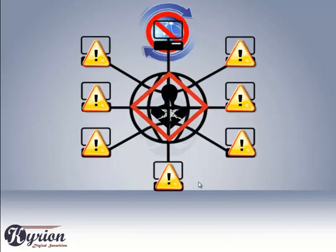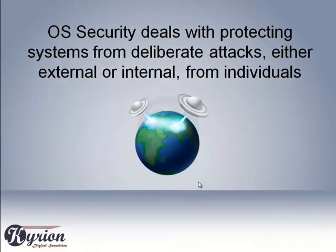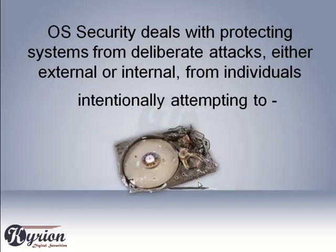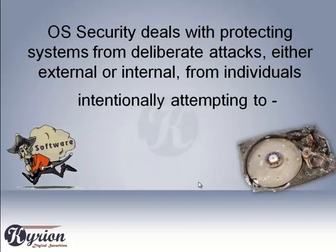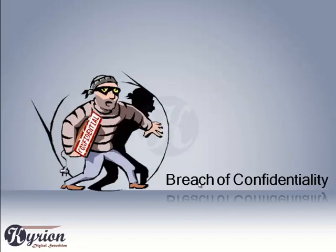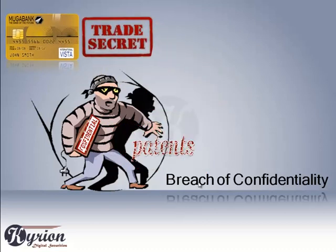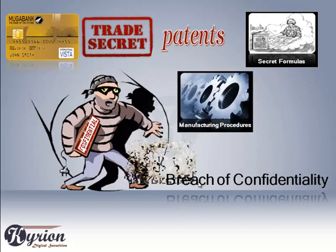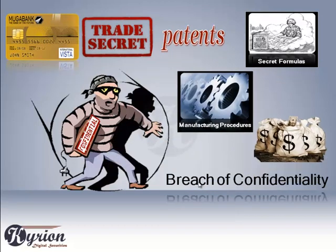Operating system security deals with protecting the system from deliberate attackers — either internal or external — from individuals intentionally attempting to steal or damage information. Some attacks are more serious than others. Among these dangers is breach of confidentiality: theft of private or confidential information such as credit card numbers, trade secrets, patents, secret formulas, manufacturing procedures, and financial information.